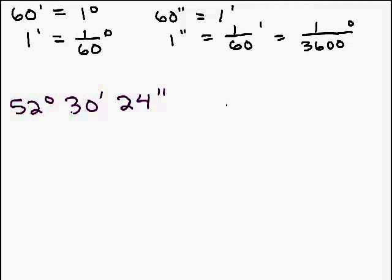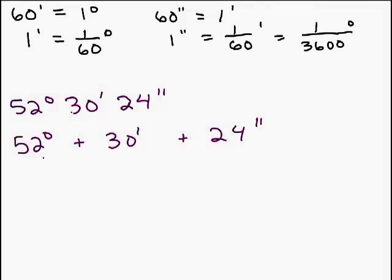Here's the quick and easy way to do this. You know the 52 degrees is still going to be 52 point something, right? So you know that's not going to change. The thing you really have to work on is the 30 minutes and the 24 seconds. You're going to have to add that decimal part on. You could think of it as adding these three parts together.